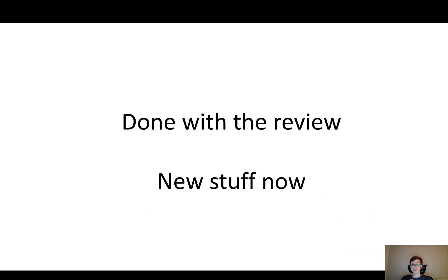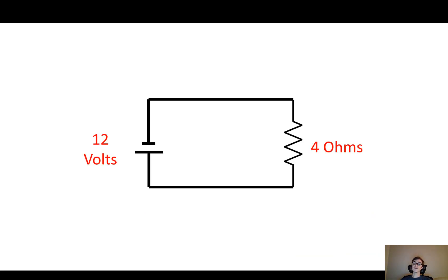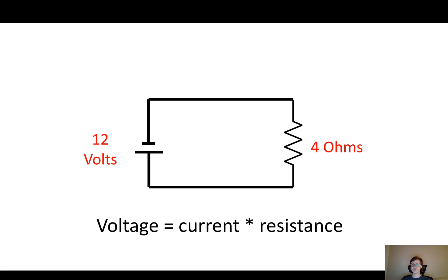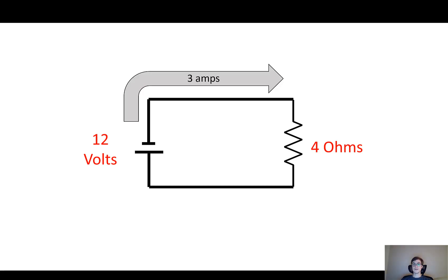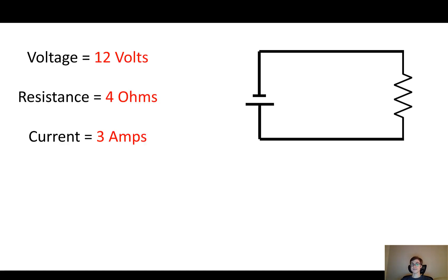That's done with the review — this is new stuff now. Let's say I have a circuit: a 12-volt battery stuck to a 4-ohm resistor, and electricity is flowing through it. I want to know how powerful this resistor is. To do that, I need the voltage, the resistance, and the current. We know that V equals IR — that's Ohm's law, voltage is current times resistance. The voltage is 12 volts, the resistance is 4 ohms, so the current is 3 amps. So this is a 12-volt battery stuck to a 4-ohm resistor releasing 3 amps of current.